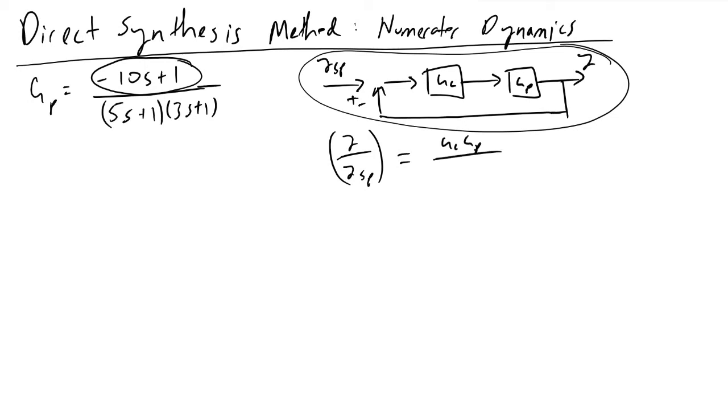The closed loop transfer function of this system will have the form gc*gp, the product of the two transfer functions in between the output and the input, divided by the characteristic equation 1 plus gc*gp.